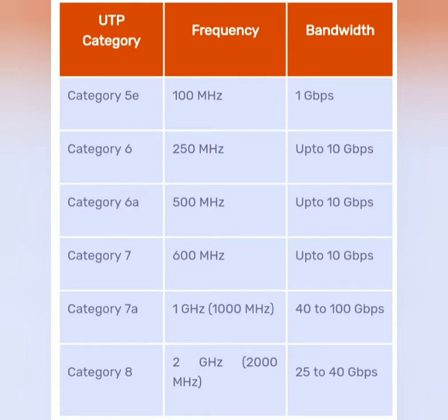The table lists different categories of twisted pair cables and their bandwidth and frequencies. The table has three columns: UTP category, frequency, and bandwidth. Let us discuss these categories.